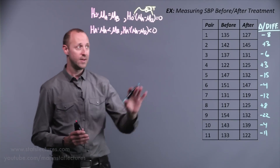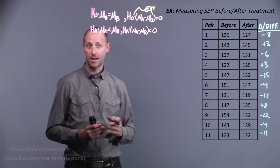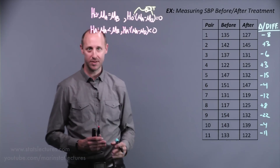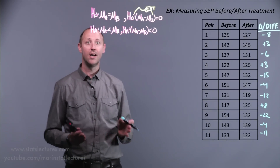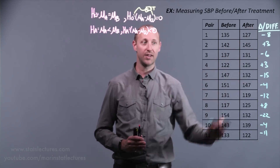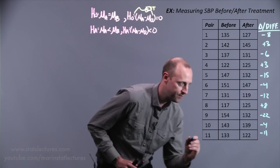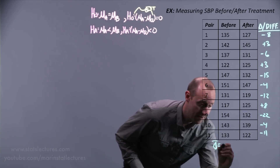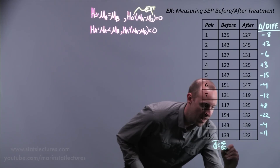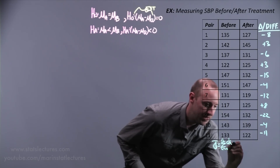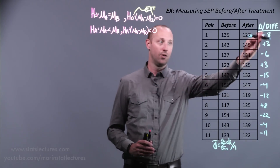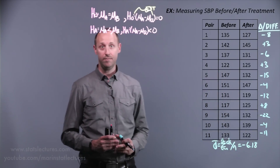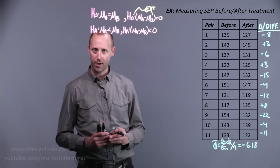We've essentially put ourselves back in the same scenario as the one-sample t-test. Rather than looking at before and after measurements separately, since they're paired, we can take advantage of that and look at the change. Now we have a single variable. We can calculate the mean of these differences — labeled d-bar — summing each individual difference and dividing by the sample size n. The average difference comes out to negative 6.18, meaning on average there was a decrease of about 6.18 after treatment.